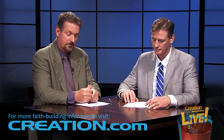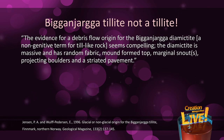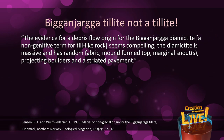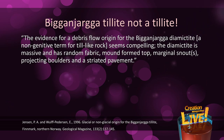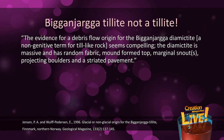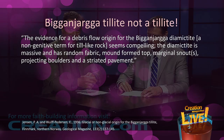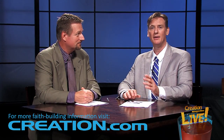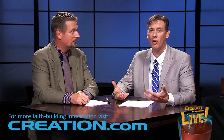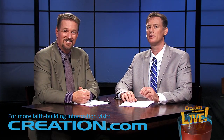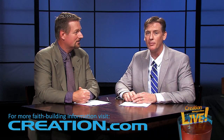Investigators Jensen and Wolf-Peterson conclude: the evidence for a debris flow origin for the Biggenjarga diamictite — a non-genetic term for a tillite rock — seems compelling. The diamictite is massive and has random fabric, mound form top, marginal snouts, projecting boulders, and striated pavement. So the implication of this result is that the main diagnostic features for this ancient ice age are really not diagnostic at all. It's been known for a long time that the features of tillite cannot be distinguished from a debris flow.